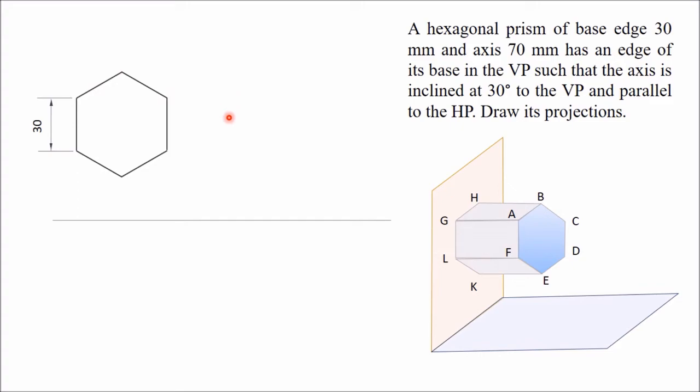Now mark all the vertices. These are the front vertices: A, B, C, D, E, F. And the back vertices: A dash, B dash, C dash, D dash, E dash, and F dash.